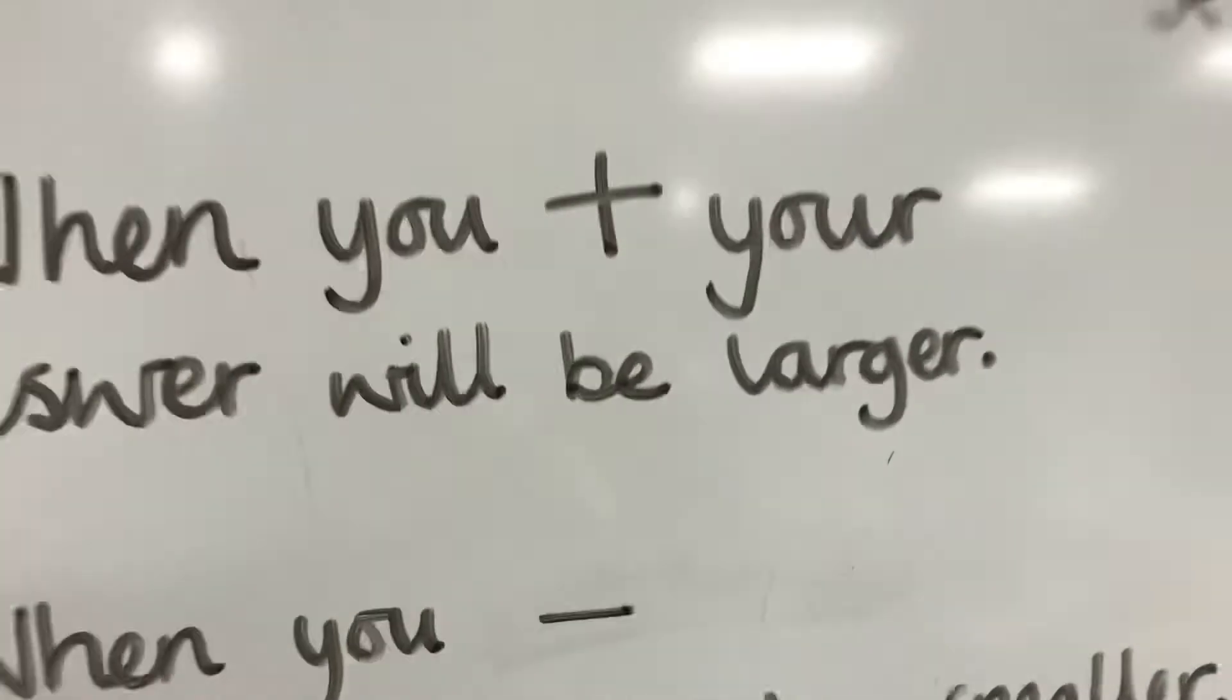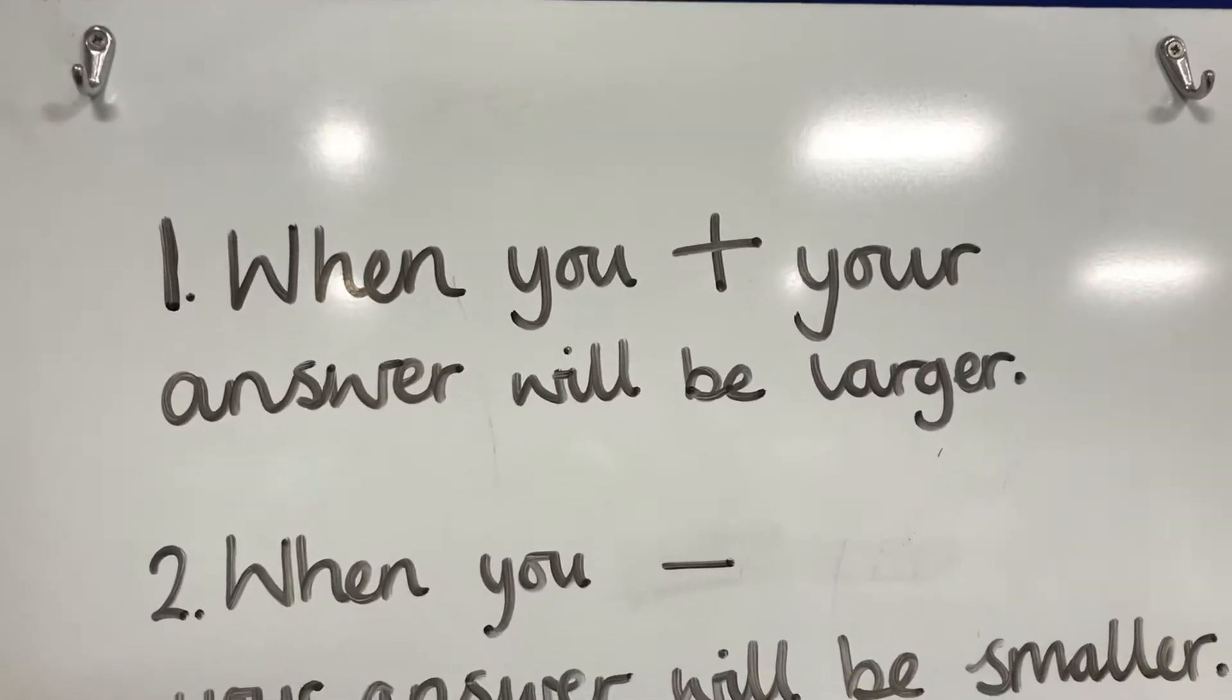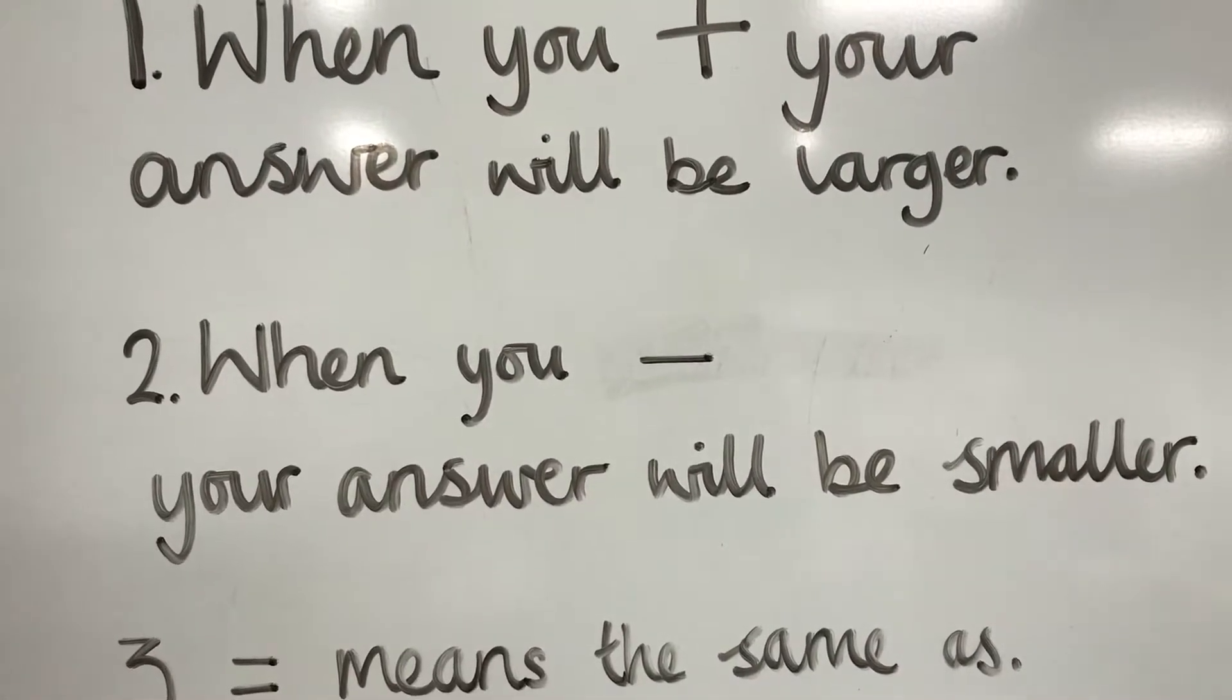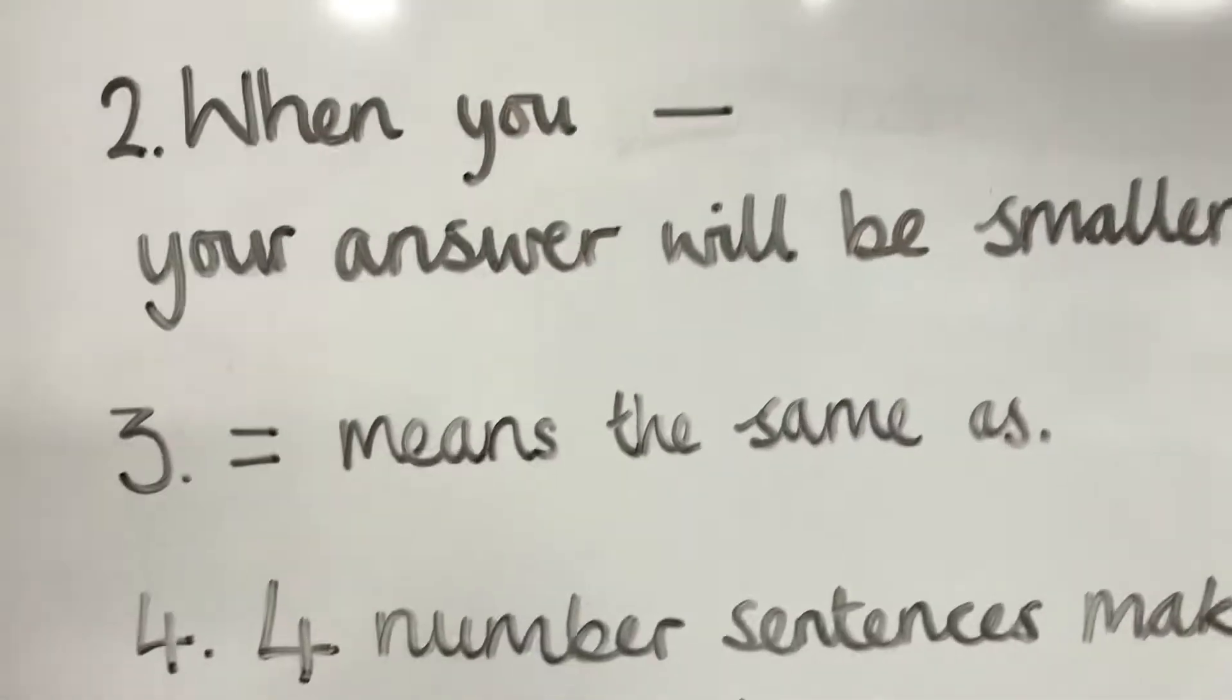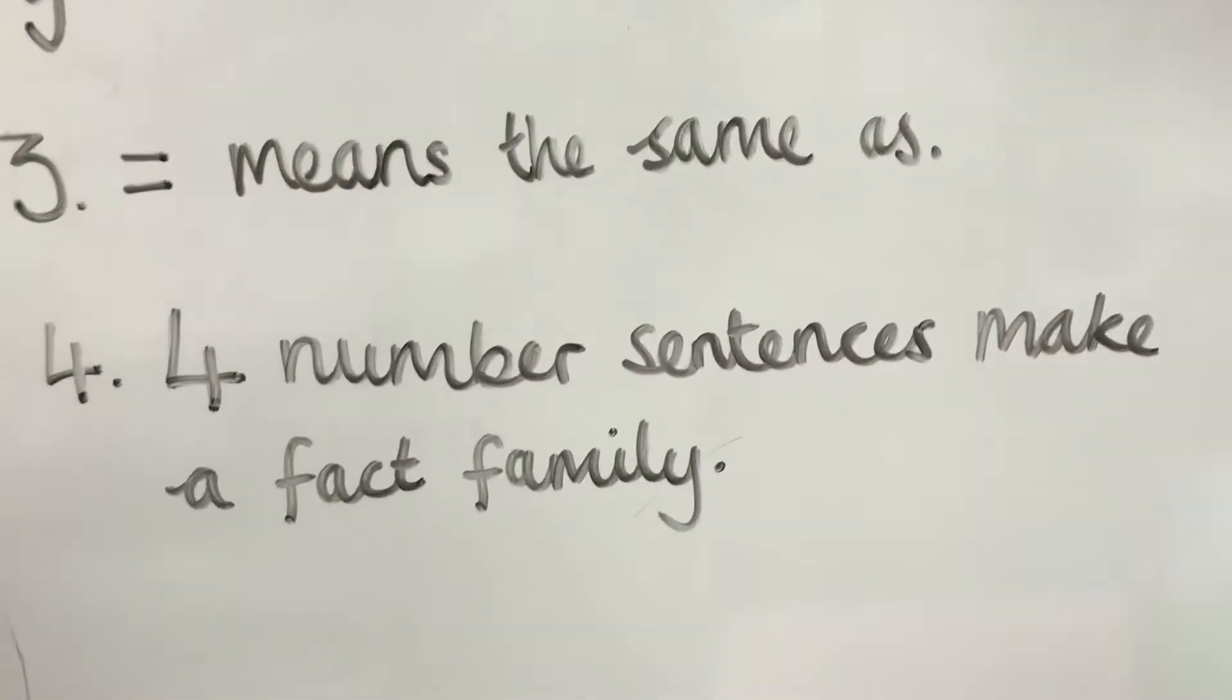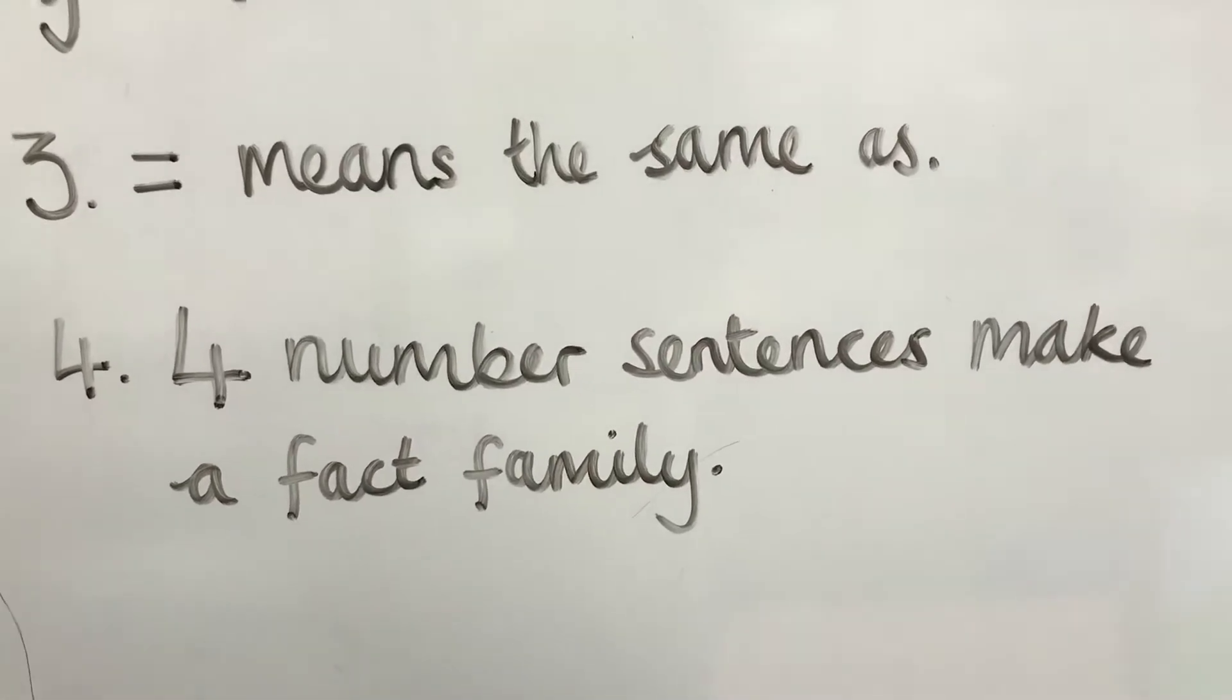The first thing we need to know is that if we add two numbers together, the answer will always be larger. It will always be greater than the numbers you started with. We also need to know that when you subtract one number from another, your answer will be smaller than the number you started with. We need to know that the equal symbol means the same as. And four number sentences make a fact family. Basically, there's two additions and two subtractions.